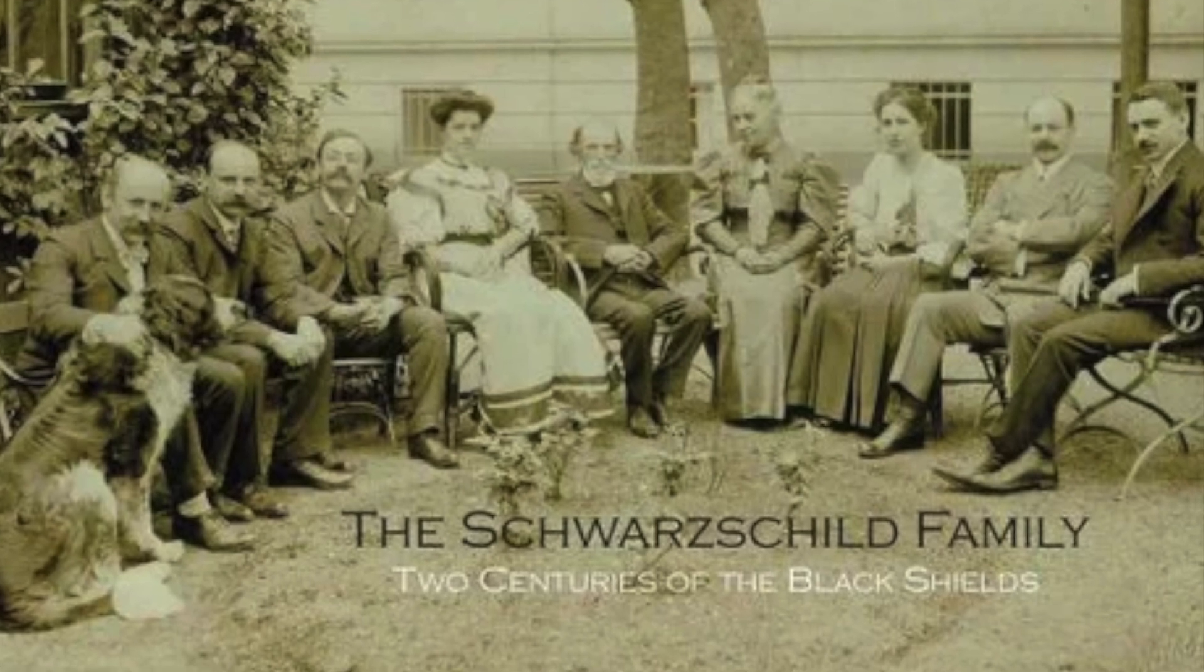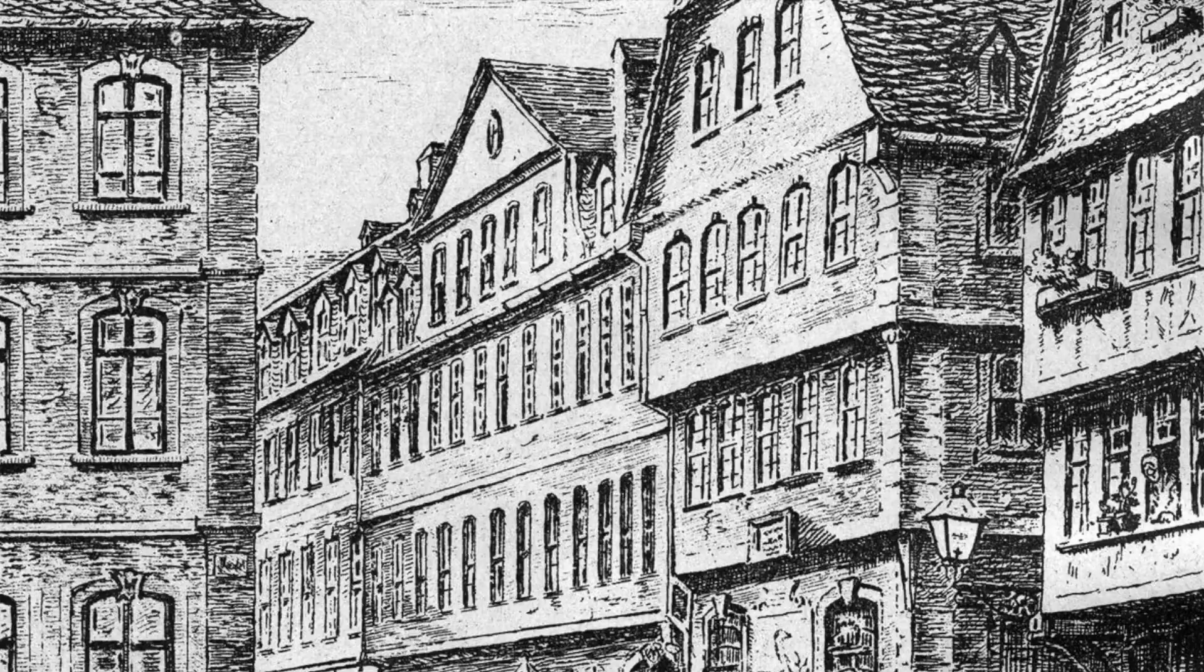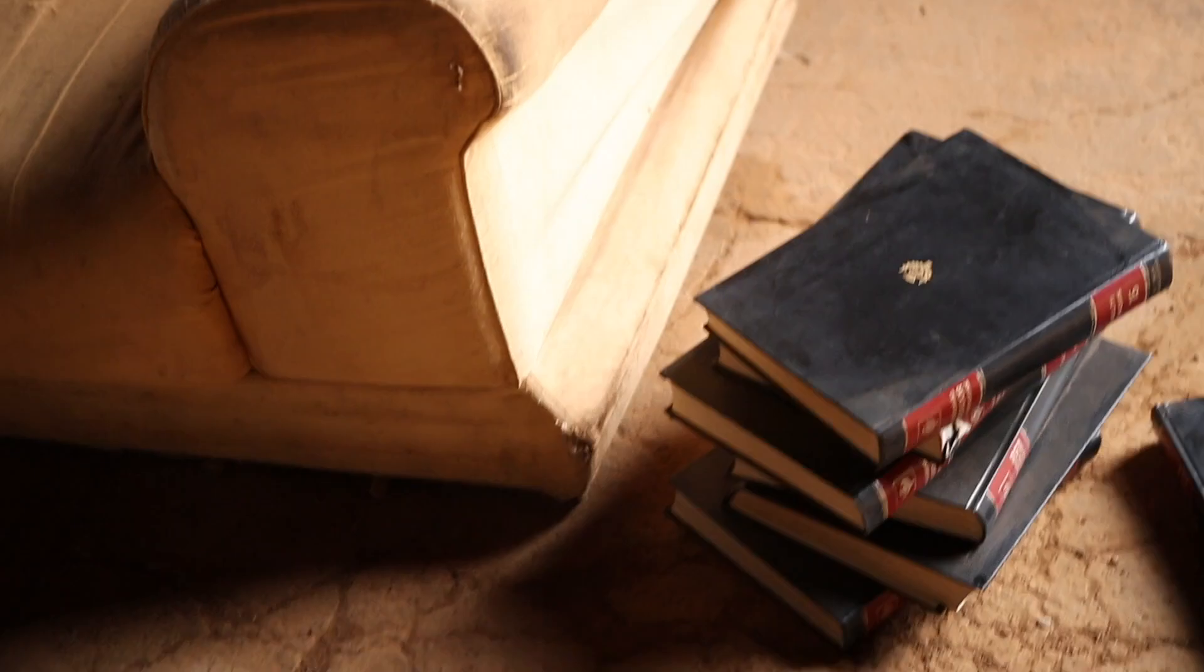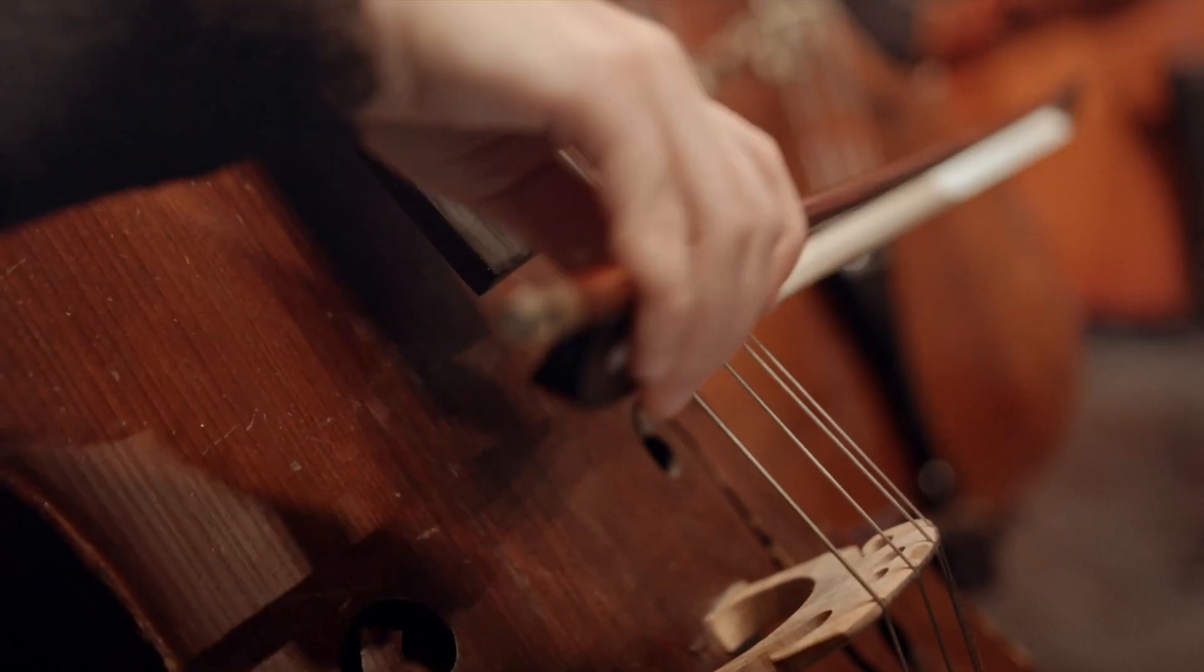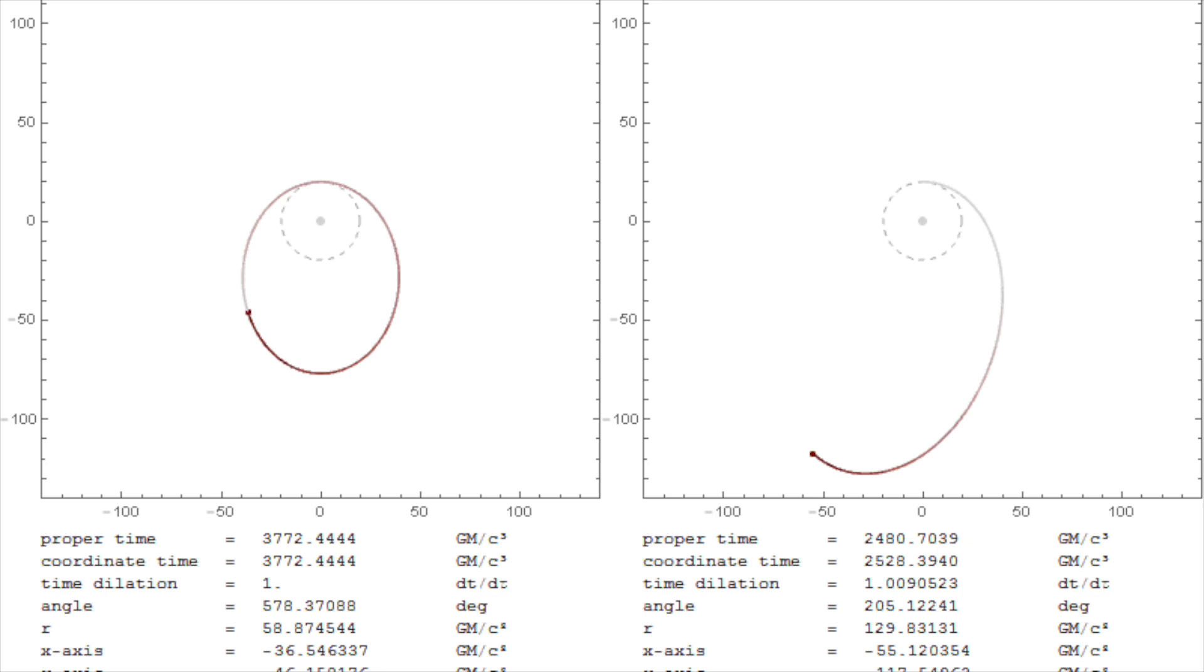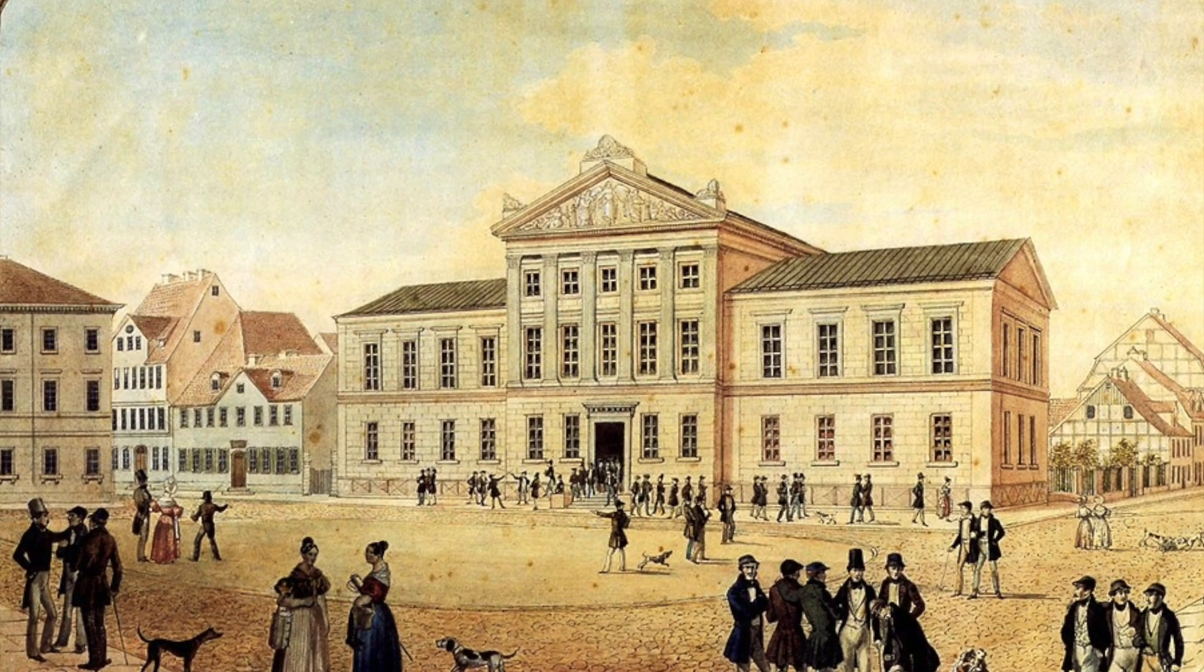Karl Schwarzschild was born into a Jewish family on the 9th of October 1873 in Frankfurt am Main. He received a complete education, studying Greek, Latin, music and art, but he showed exceptional talent in the field of astronomy. Already before turning 16, he had published two papers on binary orbits.